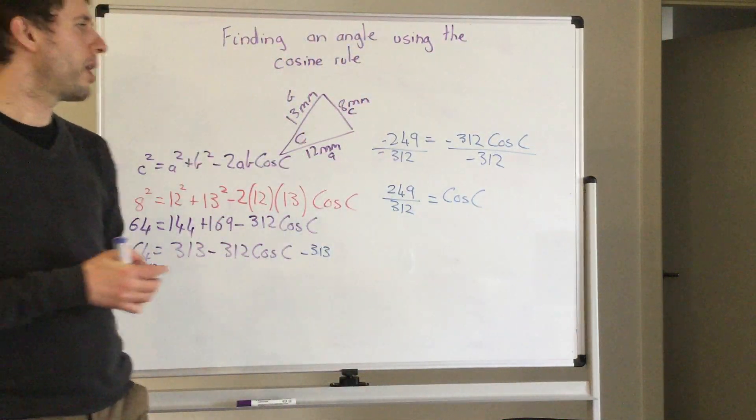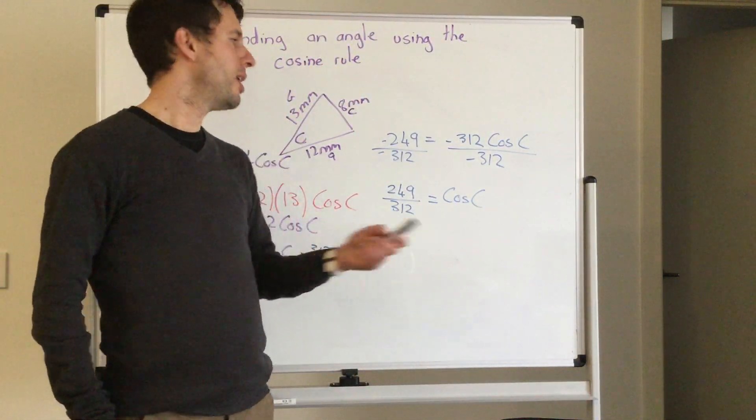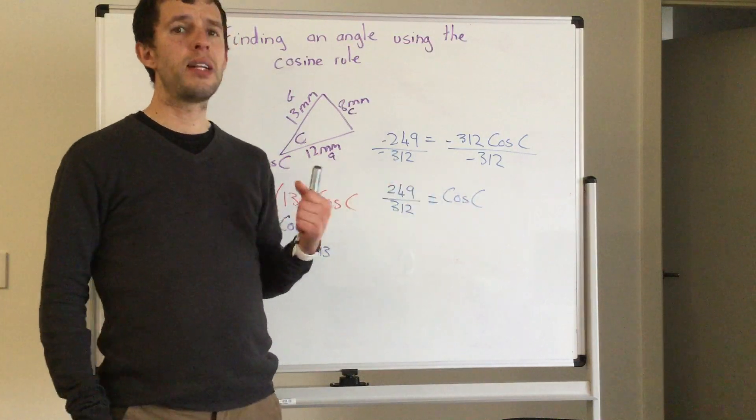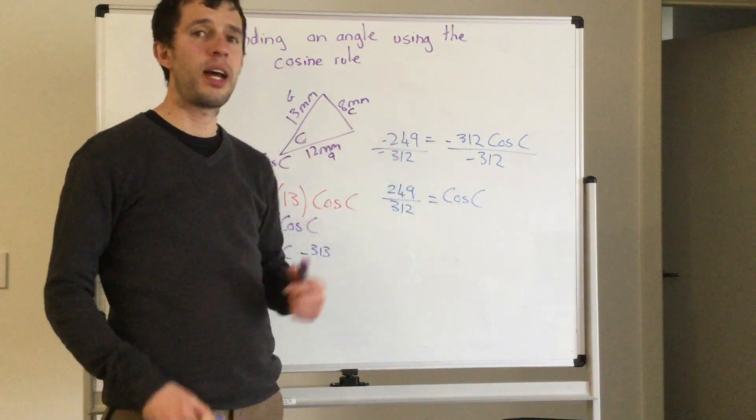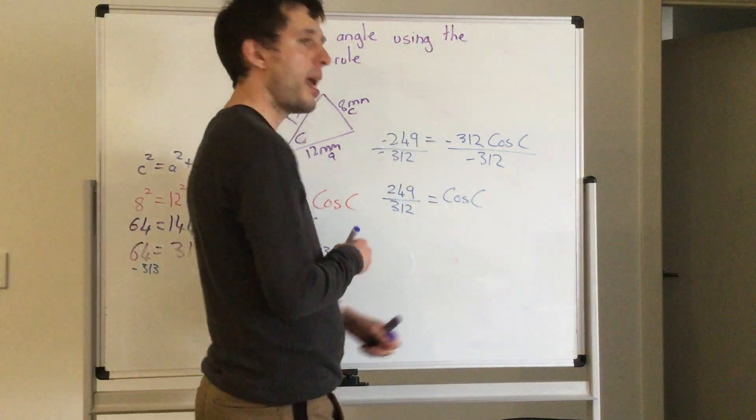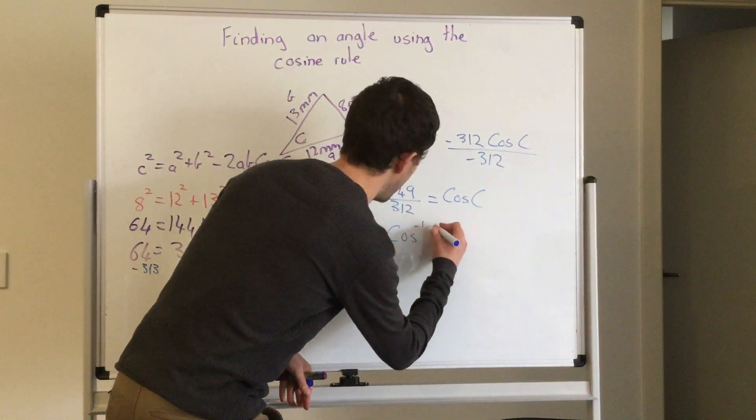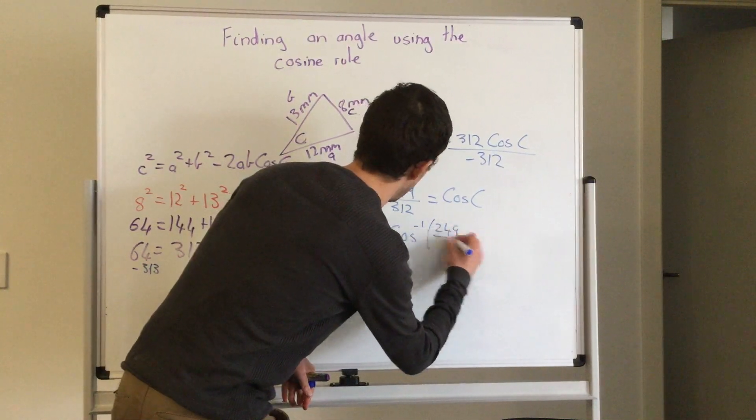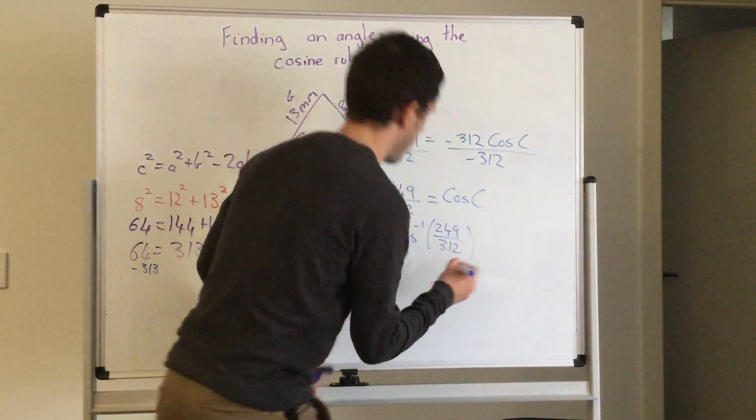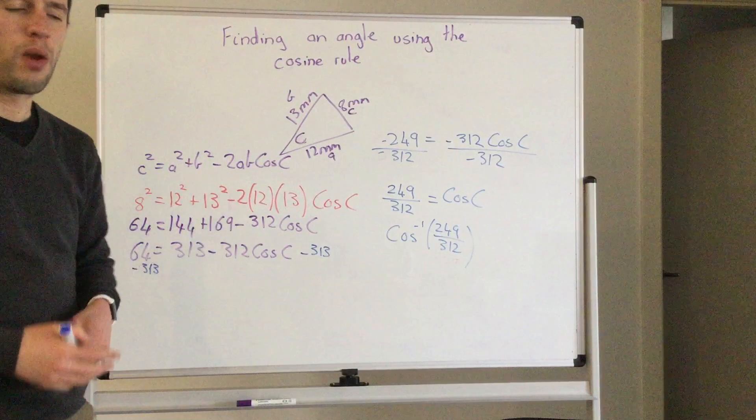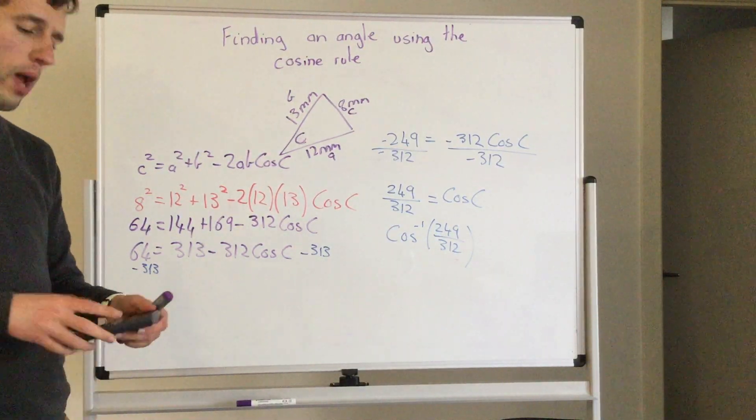If you remember, going back to basic trig, to get the angle by itself we take cos to the other side and it becomes cos negative 1. So cos negative 1, 249 over 312, and we should be able to get our angle.